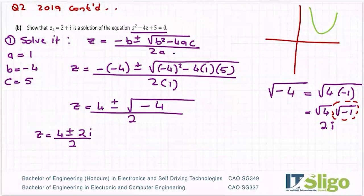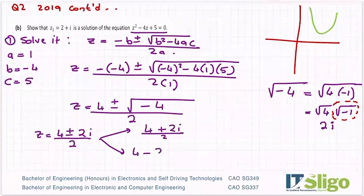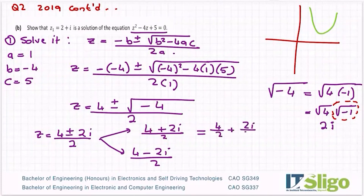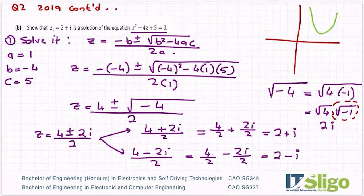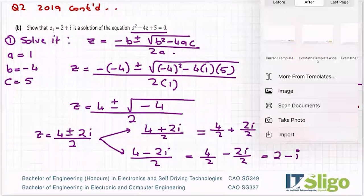So we write this one down as 4 plus or minus 2i all over 2. Just like we would any other quadratic, we're going to split it into the plus and the minus. So I end up with 4 plus 2i all over 2, 4 minus 2i all over 2. And because there's two terms, you divide each one by 2. So this is equal to 2 plus i, and this one is equal to 2 minus i. The question said show that Z1 equals 2 plus i is a solution. There she is. And that's you showing that it's a solution.